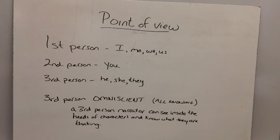Third person is by far the most used. He, she, or they. He went to the store. She went to the store. They are our friends. Those are all third person. Third person omniscient. This one's very important. All knowing. Omniscient means all knowing. A third person narrator can see...